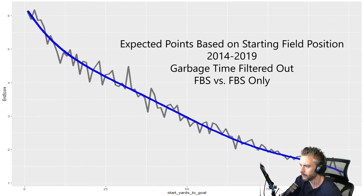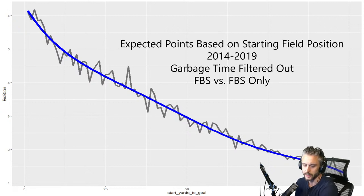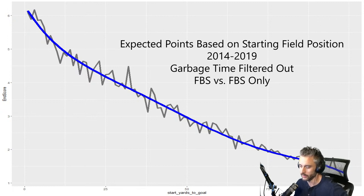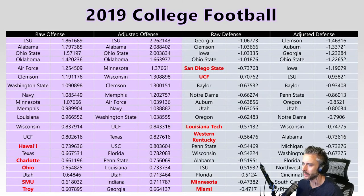My garbage time filter is based on roughly eight times the number of remaining possessions for a team. I also filter out end-of-half clock kills and kneel-downs. Additionally, I only use FBS versus FBS games — FCS versus FBS matchups are so mismatched that they're not worth including, and building a full FCS dataset is too difficult given how hard it already is to get FBS data.